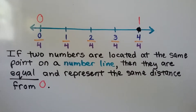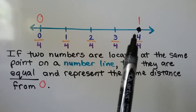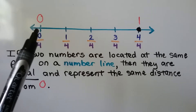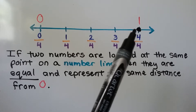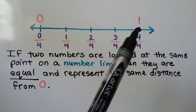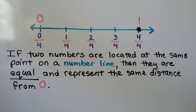If two numbers are located at the same point on a number line, then they are equal and represent the same distance from zero. Here we have zero and we've got four-fourths, which is also one. Four-fourths is at the same point as one on the number line, so they represent the same distance from zero and they're equal to each other.